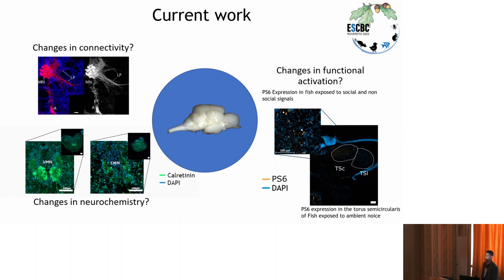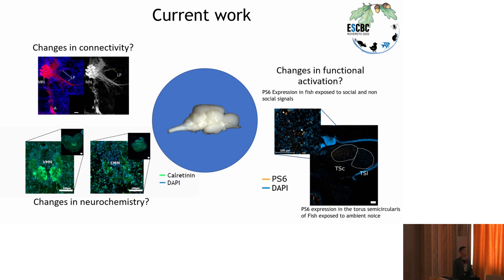I am also looking into their brains to understand if this switch in social communication system was also translated into changes in their connectivity. I am tracing the electrosensory and acoustic systems in the three species, and also tracing the vocal-producing system and the electric-producing system. We are also looking at whether this change in social communication system is translated into changes in neurochemistry — for example, whether there is a different expression of calcium binding proteins in neurohistochemistry, and whether there are changes in functional activation by using PSCs as a marker of neural activity in fish exposed to social and non-social signals.